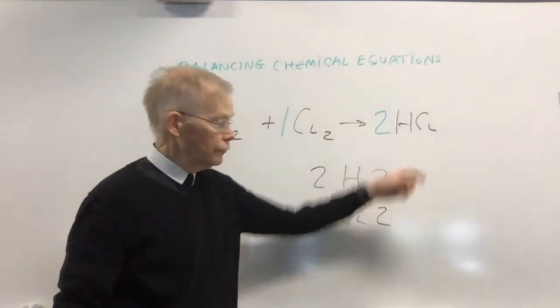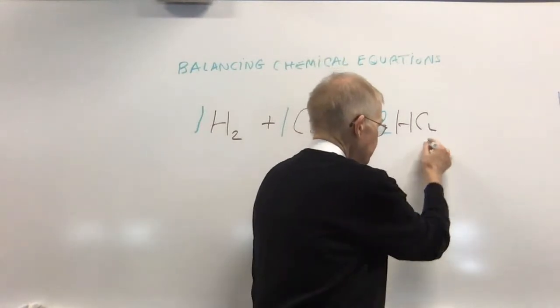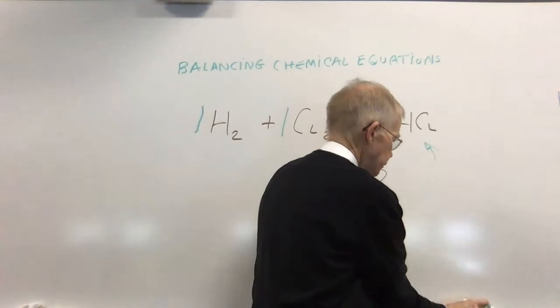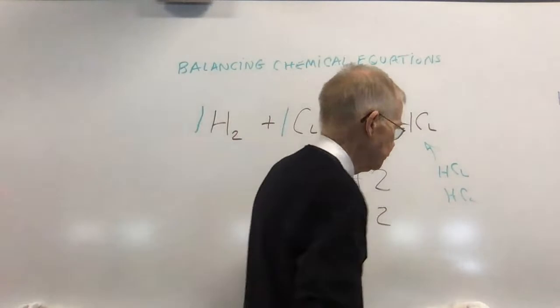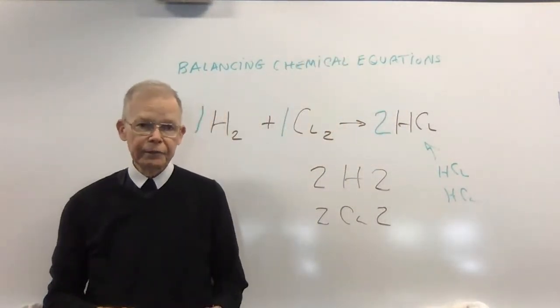When you see a two in front of a compound or any number in front of a compound, that means that you have two of those entities. So in other words, I have an HCl, and then I have another HCl. That accounts for the two molecules of each element, of each compound that we have.